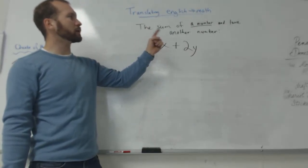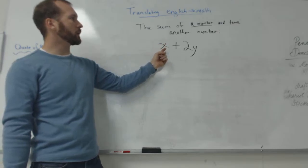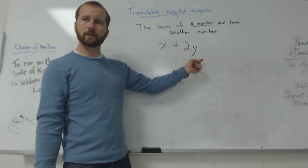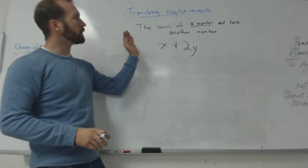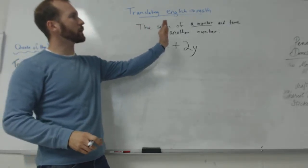So the sum of a number and twice another number would be X plus 2Y. You guys see that?